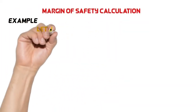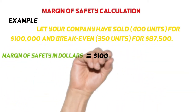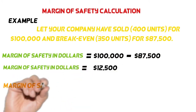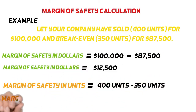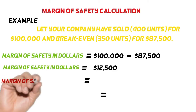Let your company have sold 400 units with total sales of $100,000. Your company's break-even in dollars is $87,500 and break-even in units is 350. To calculate margin of safety in dollars, we subtract break-even sales $87,500 from actual sales $100,000, which equals $12,500. To calculate margin of safety in units, we subtract break-even units 350 from actual sales units 400, which equals 50 units.